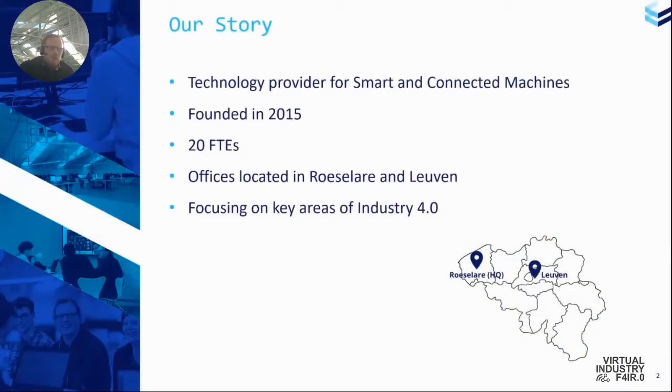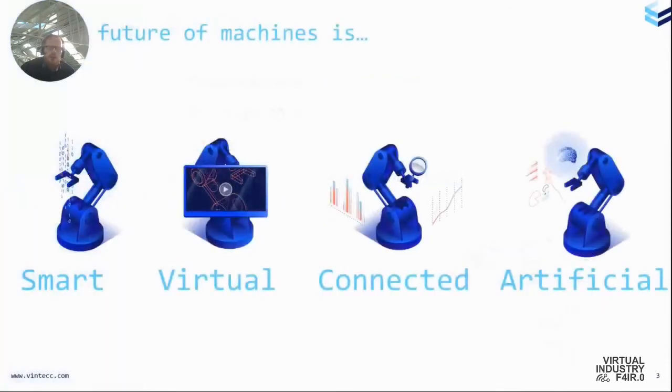Our story is very short. So we are a company that's founded in 2015. We are a technology provider for smart and connected machines. We have now around 20 FTEs right now and our main headquarters is in Roeselare, West Flanders and we also have our offices in Leuven recently. The four pillars of our company are smart, virtual, connected and artificial. Those are topics that we believe that future machines need them. But here in this case we will talk more about the smart parts and a little bit about the artificial parts.